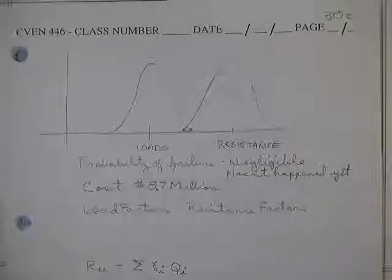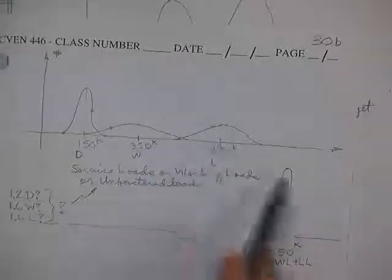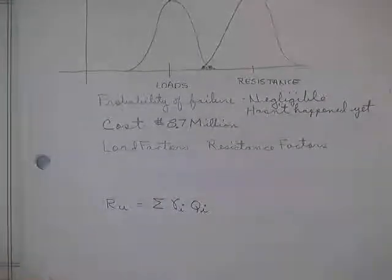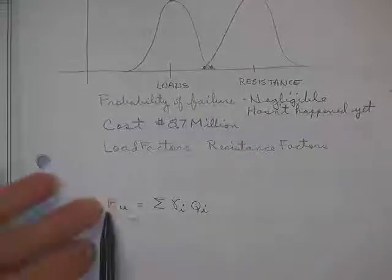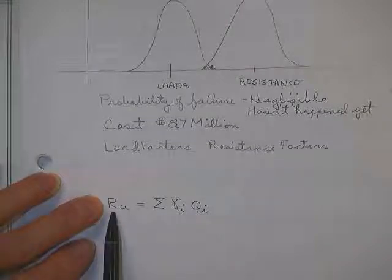So we admit that there's some small, negligible probability where the loads could be beyond belief and the resistances are just terribly shoddy where you could have a failure. But that probability is so close to zero we're willing to live with it. Off by a factor of 10.